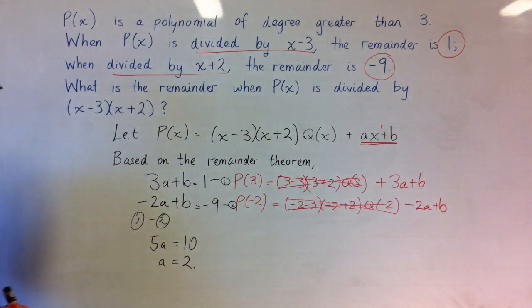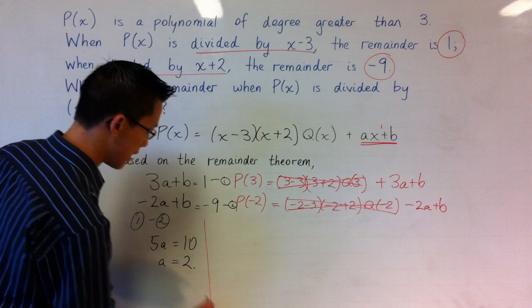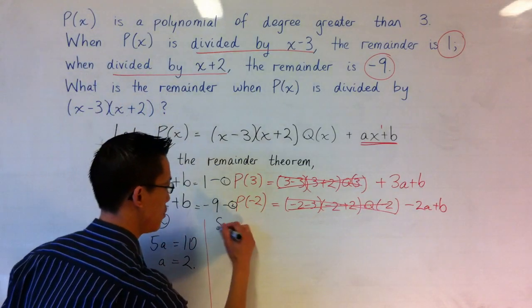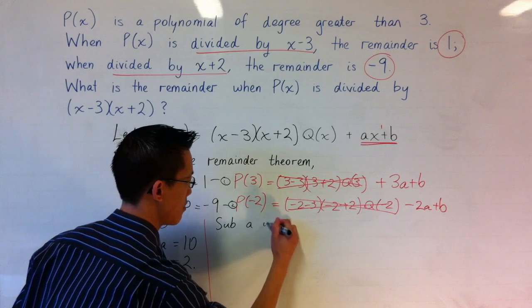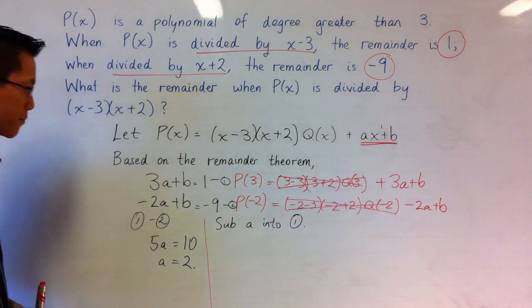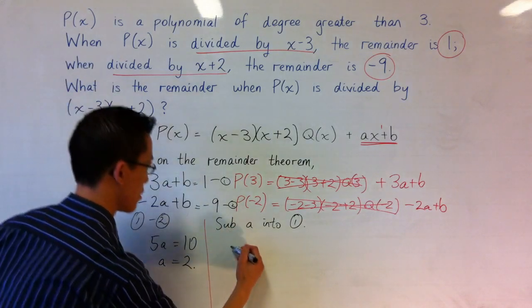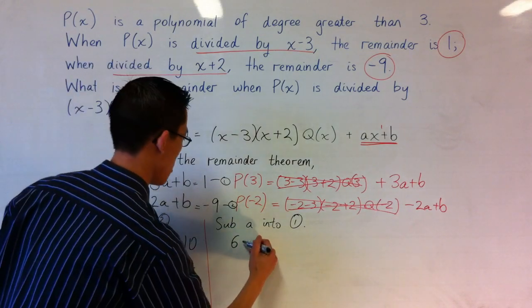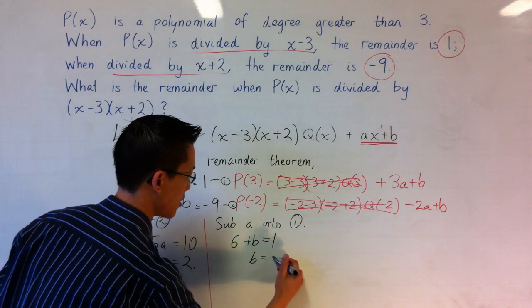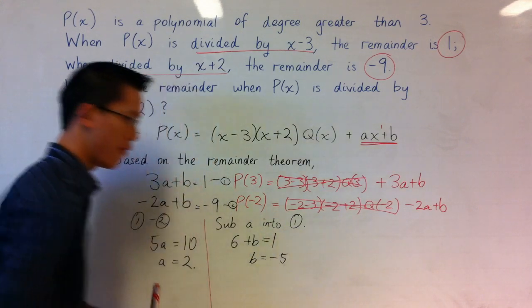And I can now simply substitute that into whichever equation I like to find b. So I'll choose equation 1. Substitute a into equation 1. That gives us 3 times 2 is 6 plus b equals 1. So that gives us our value for b.